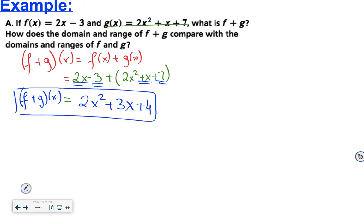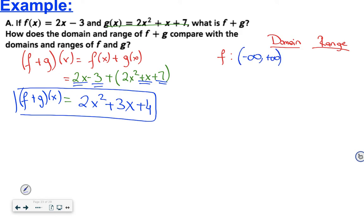Next, how does the domain and range of (f + g)(x) compare with the domains and ranges of f and g? Let's find the domain and range of f first. f(x) equals 2x minus 3 is a linear function. You can input any x value, so the domain of f is negative infinity to positive infinity. The range is also negative infinity to positive infinity.